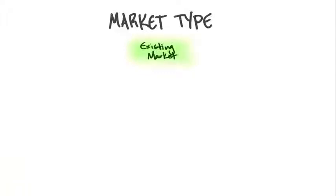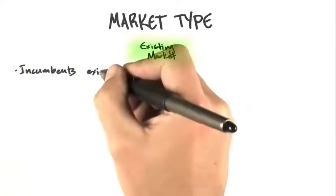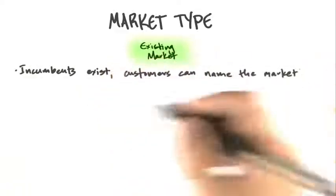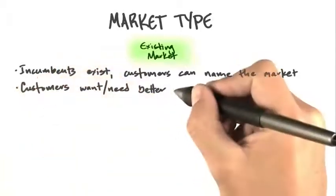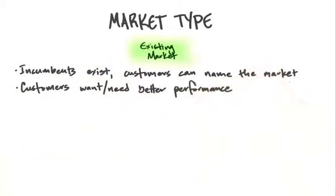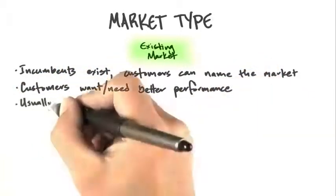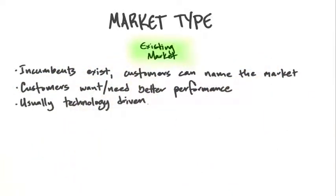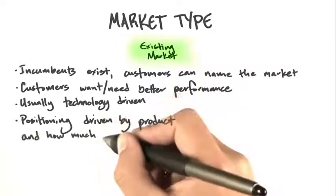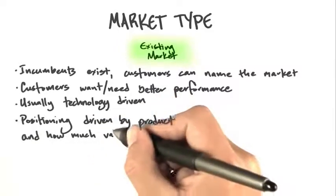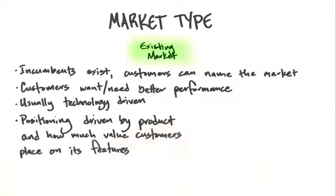A little further definition: in an existing market, incumbents exist, customers can name the market, customers want or need better performance, and it's usually a technology-driven play. Positioning is driven by the product and how much value customers place on its features.